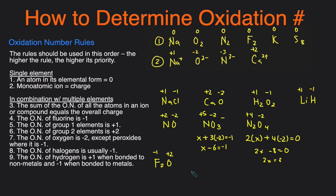Let's look at CaSO₄. Ca is in the second column, so it's +2. O is −2. We use algebra to solve for S. Setting up the expression: +2 + X + 4×(−2) = 0, so 2 + X − 8 = 0, meaning X = +6. Sulfur has an oxidation number of +6.